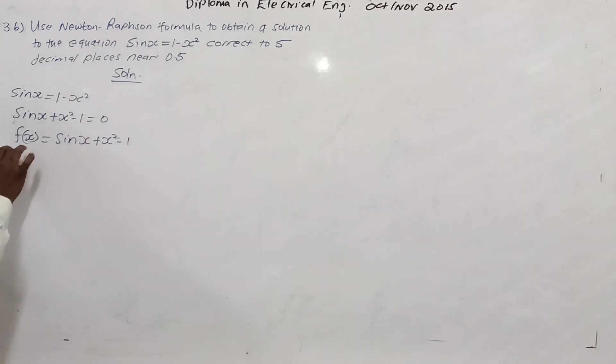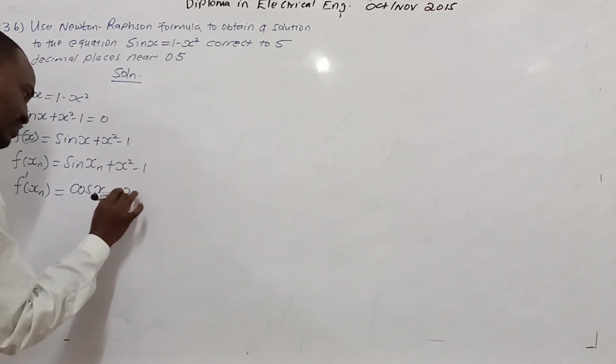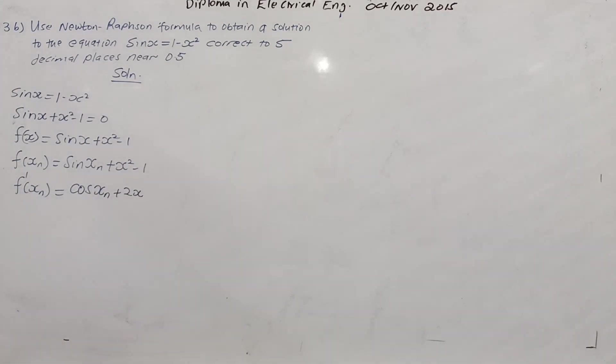Let us now have function of xn, which is equal to sin xn plus xn squared minus 1. What about derivative of that function xn? The derivative of function of xn is equal to, if you differentiate sine, you get cosine, cosine of xn plus 2xn. One is a constant that disappears if you differentiate. Now, substituting in the Newton-Raphson formula.